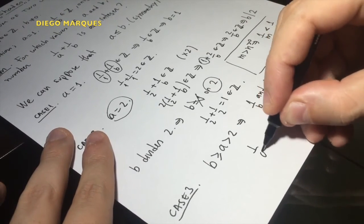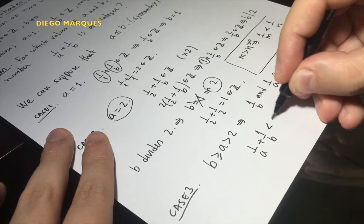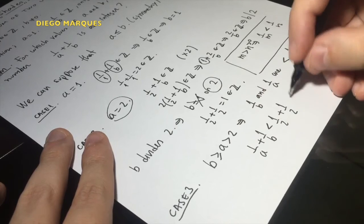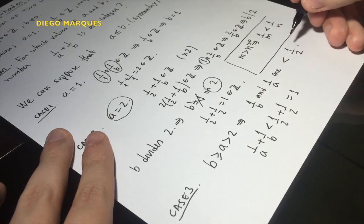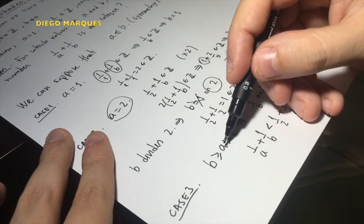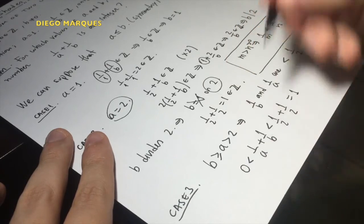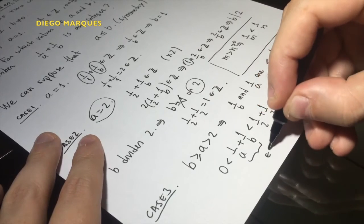So 1 over b and 1 over a are less than one-half, so 1 over a plus 1 over b is less than one-half plus one-half. And this is equal to 1. But b and a are positive, so the sum of two positive guys is positive.